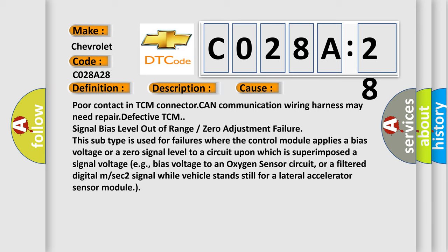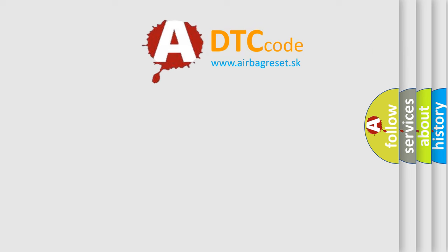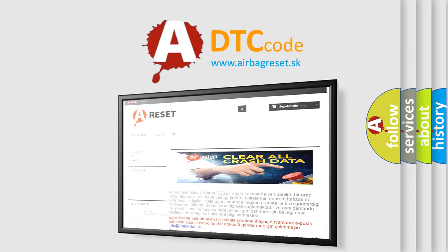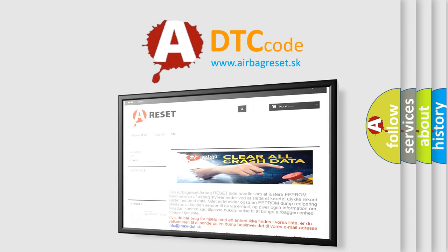This subtype is used for failures where the control module applies a bias voltage or a zero signal level to a circuit upon which is superimposed a signal voltage, e.g., bias voltage to an oxygen sensor circuit, or a filtered digital M or SEC 2 signal while vehicle stands still for a lateral accelerator sensor module. The Airbag Reset website aims to provide information in 52 languages. Thank you for your attention and stay tuned for the next video.